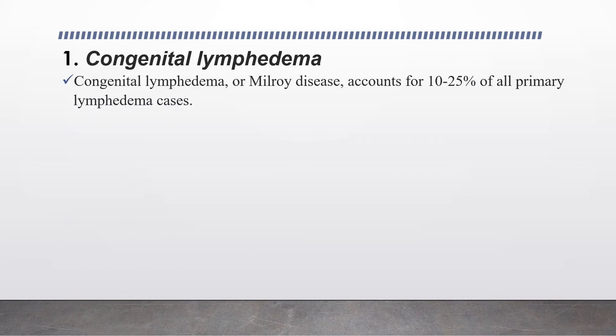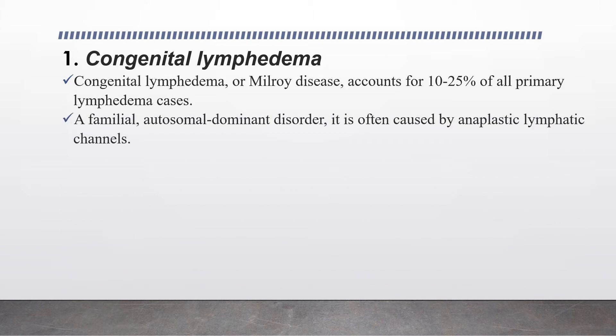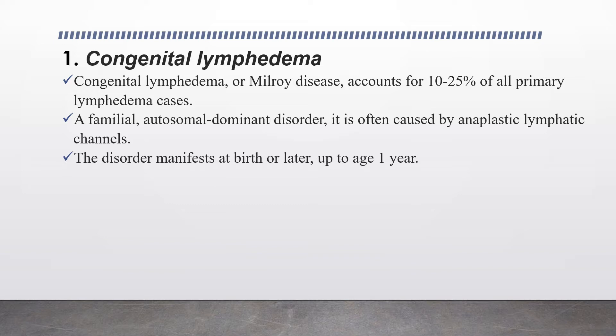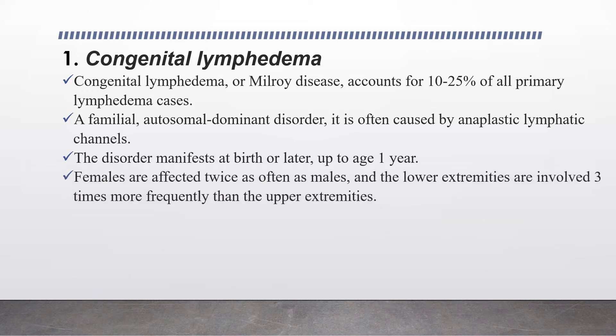The first type of primary lymphedema is congenital lymphedema, also known as Milroy disease, which accounts for 10 to 25 percent of all primary lymphedema cases. It is a familial, autosomal dominant disorder often caused by aplastic lymphatic channels. The disorder manifests at birth or up to the age of one year, though it is most often seen within the first few months of life. Females are affected twice as often as males, and the lower extremities are involved three times more frequently than the upper extremities.